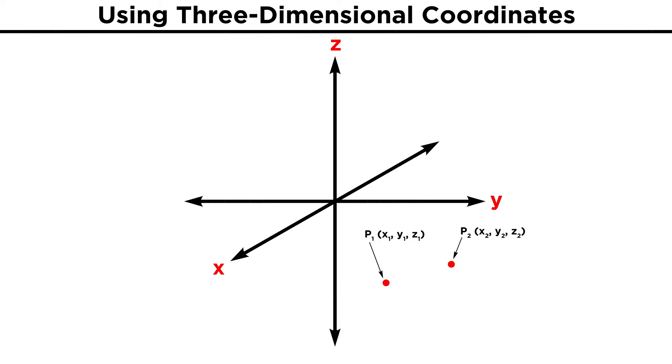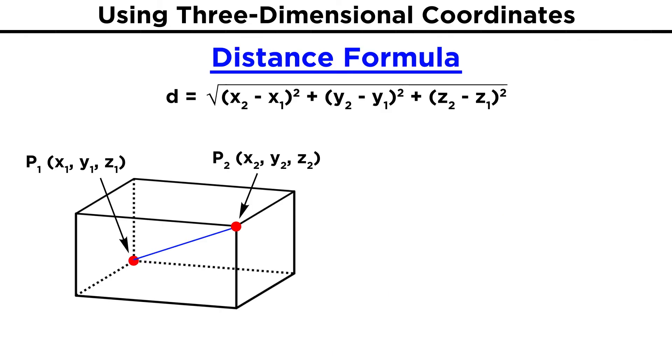If we have two points, P1 and P2, both with x, y, and z coordinates, we can draw a box whereby the two points are opposite corners of the box, and the diagonal of the box connects them. The length of this line segment, or the distance between the two points, will be given by this equation, with x2 minus x1 quantity squared, plus y2 minus y1 quantity squared, plus z2 minus z1 quantity squared, all under a square root. So all we have done to the original distance formula is added this z term.